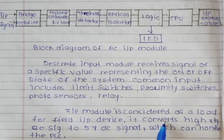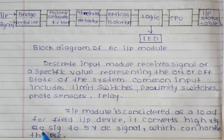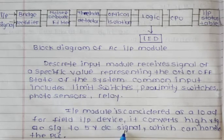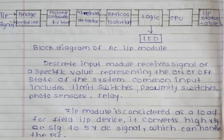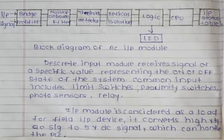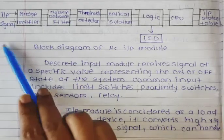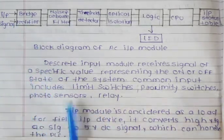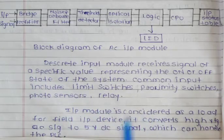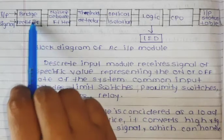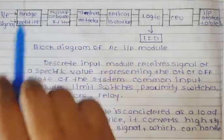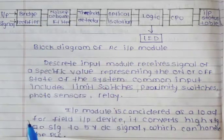It converts the high voltage AC signal to a 5 volt DC signal which the PLC can handle. So the main function here is: it converts the high voltage AC signal to a DC signal.